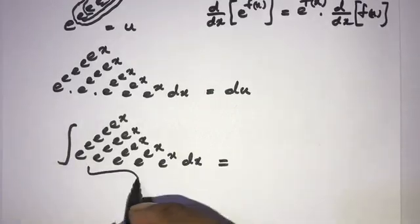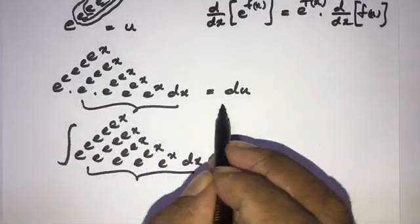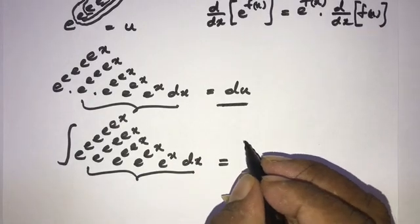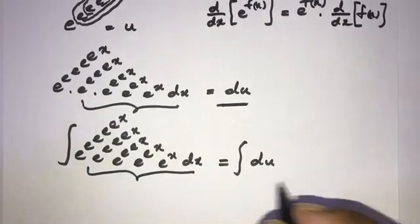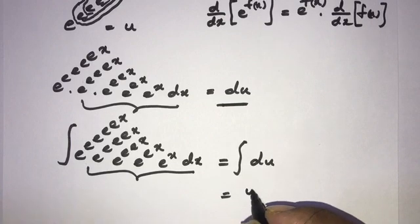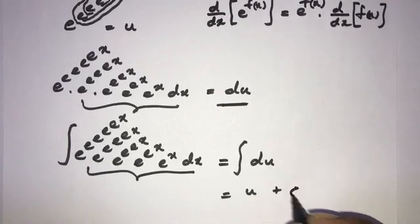Now this term equals du, so the integral of du equals u plus c, where c is a constant.